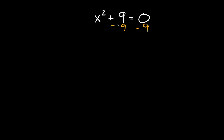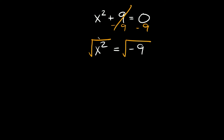We're going to first subtract 9 from both sides. Those cancel out, so we get that x squared is equal to 0 minus 9, which is equal to negative 9. Now to get rid of this exponent we need to take the square root of both sides. The square root and the squared exponent cancel out, so we're just left with x. Since we're solving a quadratic we're going to have two solutions — plus or minus the square root of negative 9.